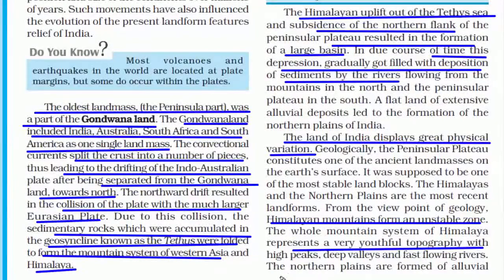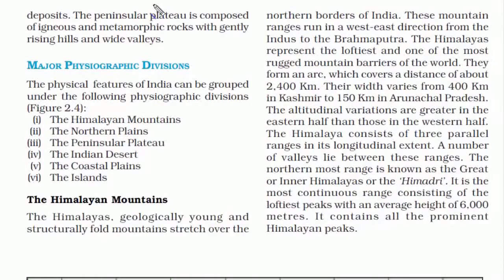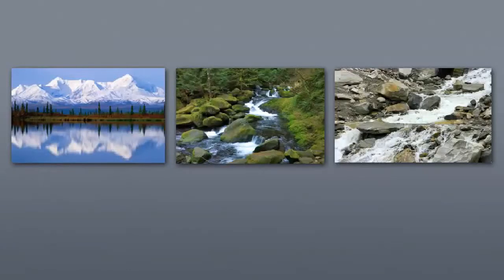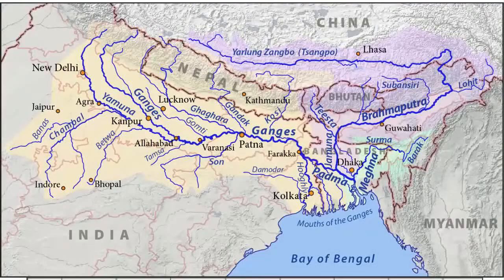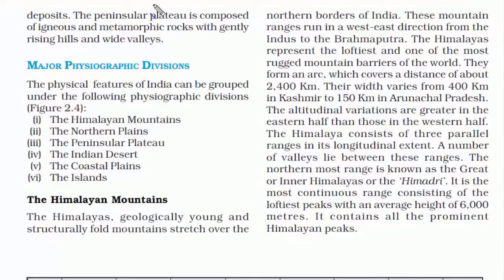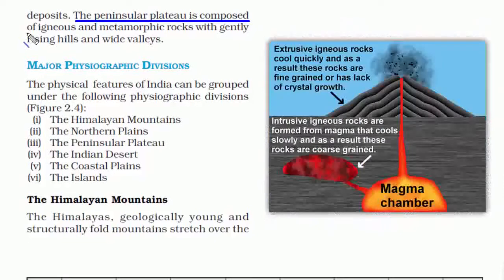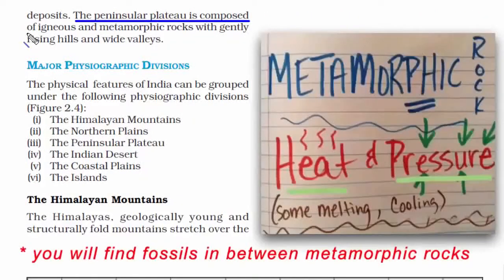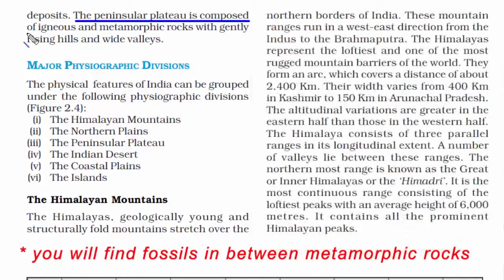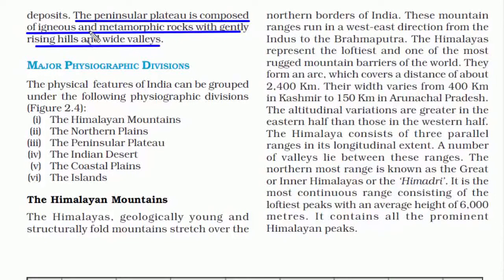The Himalayan mountains are an unstable zone but are very rich in alluvial soil. The high peaks generate a lot of ice and glaciers, and when they melt they rush down through deep valleys and flow all over northern and eastern India, finally draining into the Bay of Bengal. Fast-flowing rivers bring new soil, which is why the entire northern plain consists of rich alluvial soil. The peninsular plateau, by contrast, is composed of igneous and metamorphic rocks — igneous rocks formed through cooling and solidification of magma or lava, and metamorphic rocks formed by extreme heat and pressure.